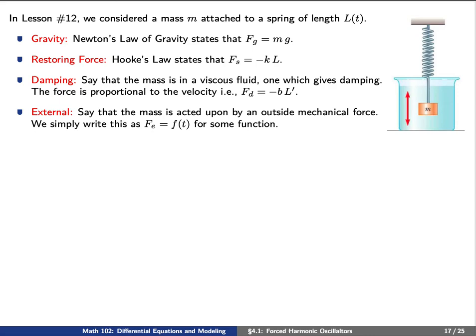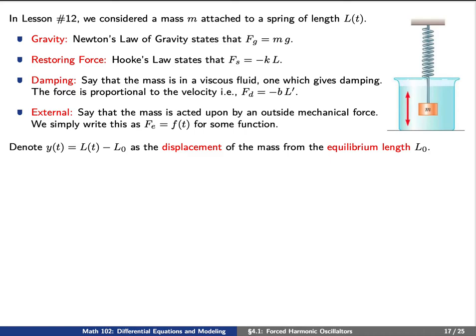Third, there is a damping force. Assuming our mass is in a viscous fluid which gives damping, the force is proportional to the velocity, so the damping force is negative b times dl/dt, where b is some positive constant. Finally, say that we have an external force — our mass m is acted upon by some outside mechanical force that we'll simply write as f(t).